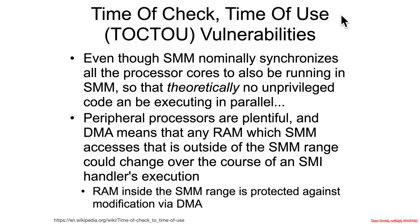Time of check, time of use vulnerabilities are a type of race condition, because essentially you may check something and say this looks good, but then some time passes and later on you use it — but it could be changed by then. It could be changed either because the data location is naturally changing, or there can be a race condition where an adversary changes it out from underneath you.